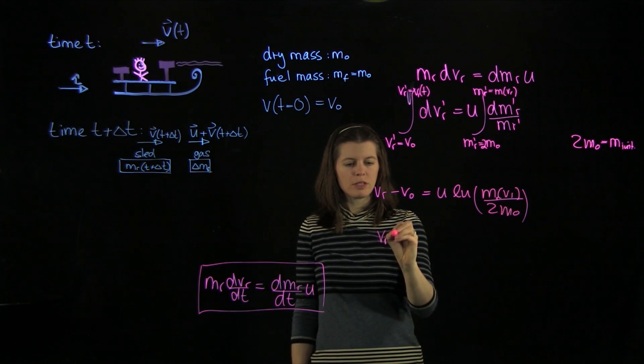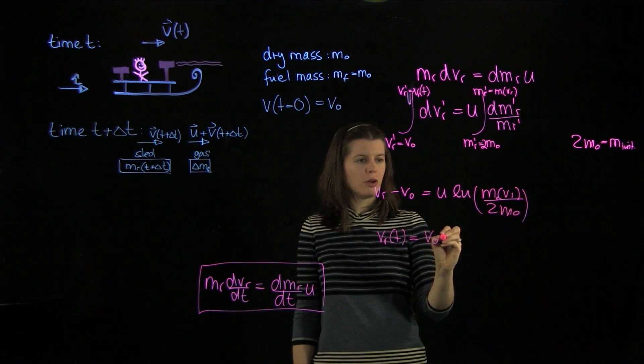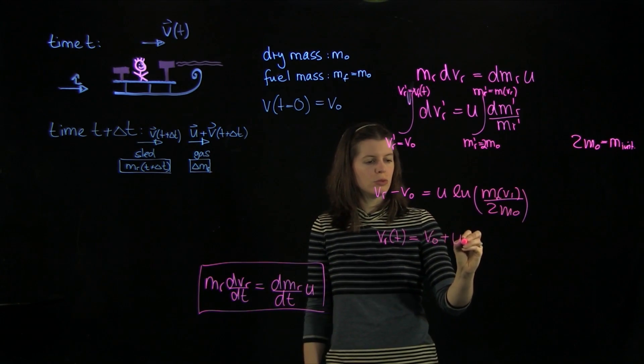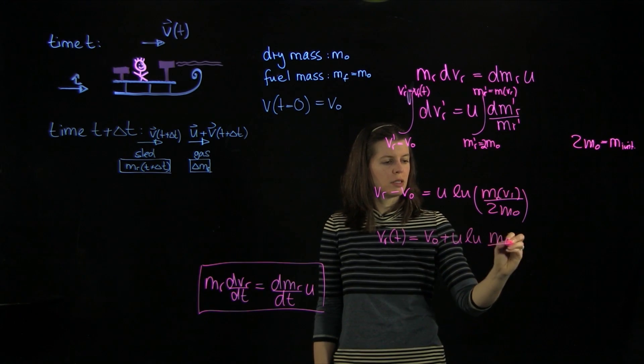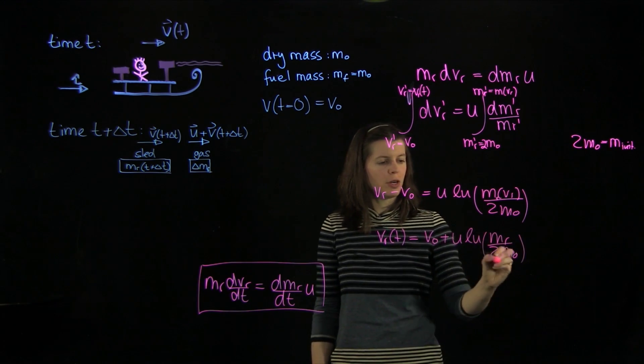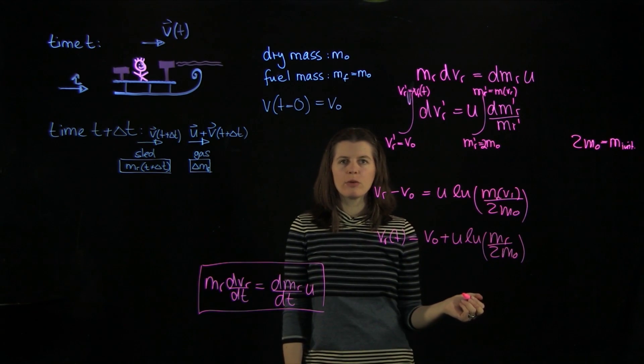And well, we ultimately want this. So this is vr of t, of course. And then we get v0 plus u ln mr over 2m0. And that is our equation.